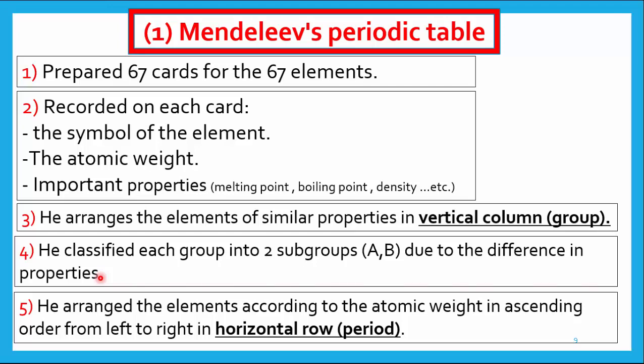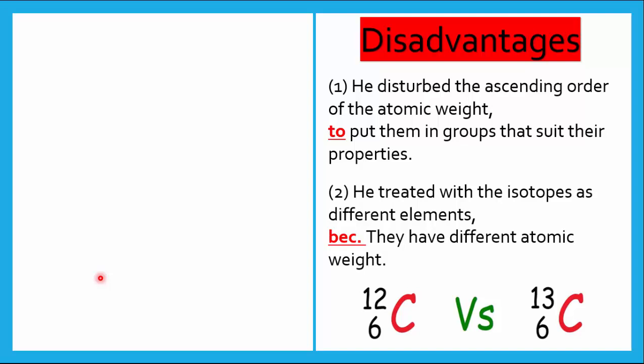However, for Mendeleev's periodic table, he was more interested in properties than in atomic weight, and that led to some disadvantages. Disadvantage number one: he made some mistakes in the ascending order of atomic weight in the horizontal row, because he prioritized properties over atomic weight — he was so focused on placing elements in groups that suited their properties that he neglected atomic weight, and that was a big mistake. Disadvantage number two: he treated isotopes as different elements. Isotopes are atoms of the same element — for example, two carbon atoms both with atomic number 6 but with different mass numbers, 12 and 13. They are the same element, just with different mass numbers. Mendeleev didn't know this and considered them two different elements, which was wrong.